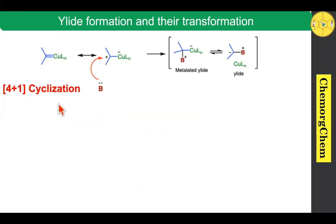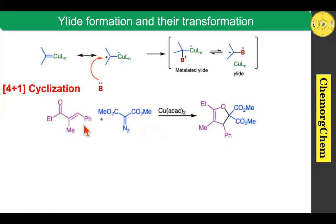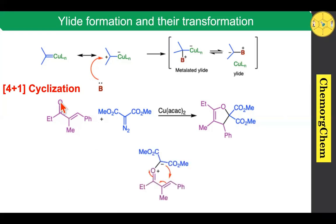Next, if we move on to the [4+1] cyclization reaction — now look at this reaction involving the alpha-beta unsaturated system. The previous three types of reactions were based on sulfur ylides. Here, when you react with these two substrates in the presence of copper acetylacetonate, it readily produces a five-membered ring system. The oxygen having a lone pair of electrons readily interacts with this center, which produces the corresponding ylide intermediate. After formation of the ylide, the negative charge attacks this center via a [1,4]-shift towards the oxygen atom, which produces the heterocyclic compound.